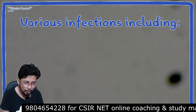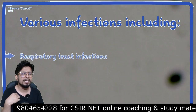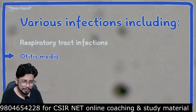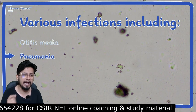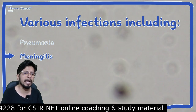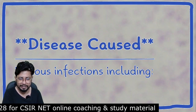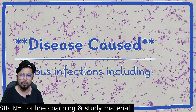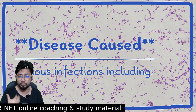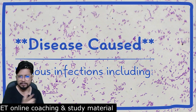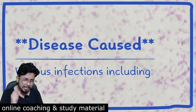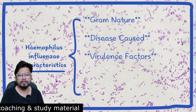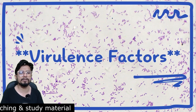The diseases include respiratory tract infections, otitis media, pneumonia, and meningitis — all related to somewhat cold and cough, related to the lungs, as well as meningitis connecting our brain. Next, virulence factors: what are the virulence factors present here?